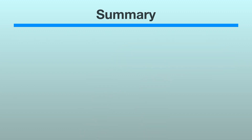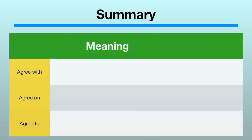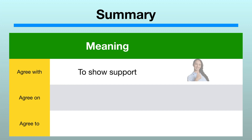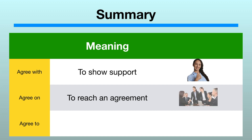Here is a quick recap of the differences between the three combinations. You use Agree With when you want to show support. Agree On means to reach an agreement. And Agree To means to accept an offer, a request, or a demand.